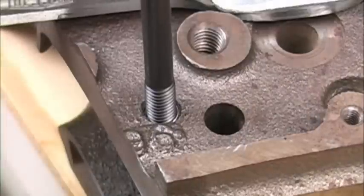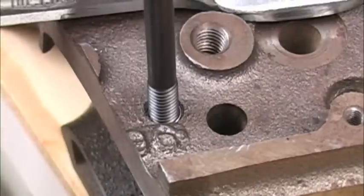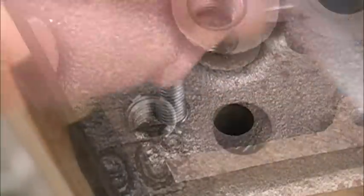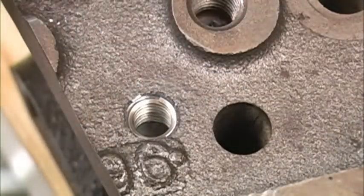When we back the insertion tool out, that releases the pressure on the insert, and it expands a little bit and fits into the threads very tightly. And now we have brand new 3/8 by 16 threads.